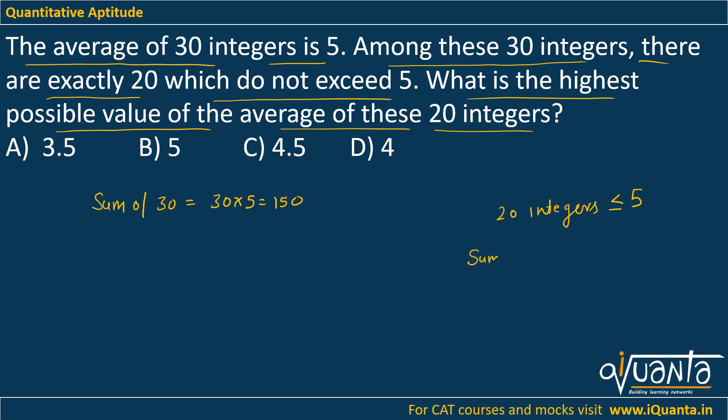So we have to maximize the sum of those 20. This will be the average of those 20: sum of 20 divided by 20. If I maximize the sum and divide it by 20, then only I will get the maximum value of average of those 20 integers.